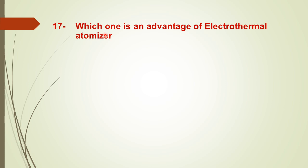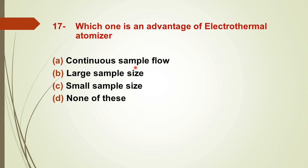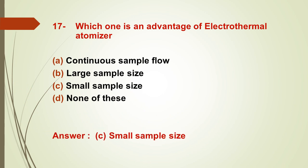Question number seventeen: which one is an advantage of the electrothermal atomizer? Options: A) continuous sample flow, B) large sample size, C) small sample size, D) none of these. The right answer is C — small sample size. Electrothermal atomizers are discrete atomizers in which a very small, confined volume is injected.